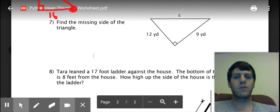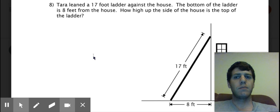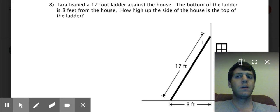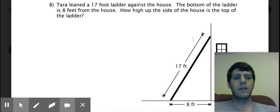Okay seven is self-explanatory. And then eight, Tara leaned the ladder against the house and you're simply finding the height where the top of the ladder meets the house. So how high up the side with the wall if the side of the house is the ladder.